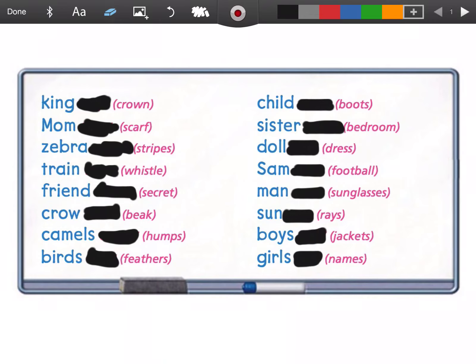I'm going to erase the black one at a time so we can see what it looks like when the king owns the crown. So if a king owns a crown, we say it's the king's crown. See the apostrophe right there before the S? That shows that the king owns it. It's his!